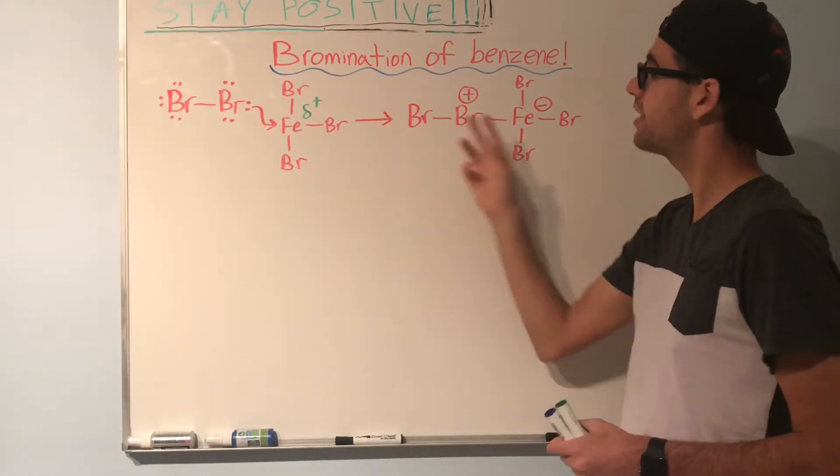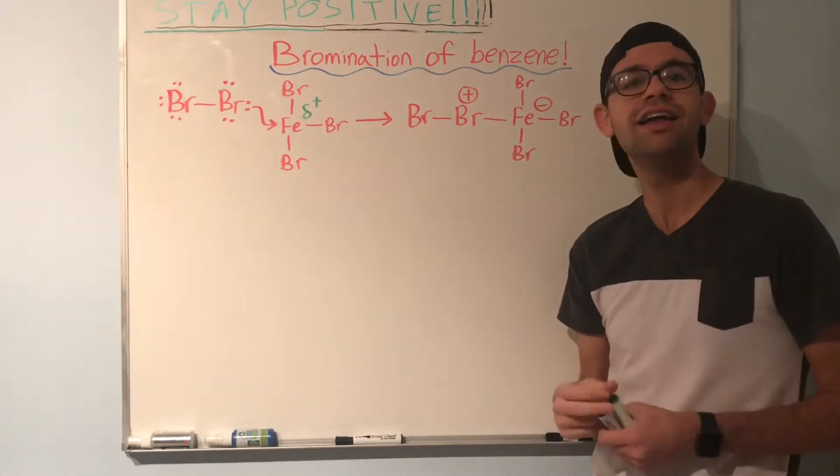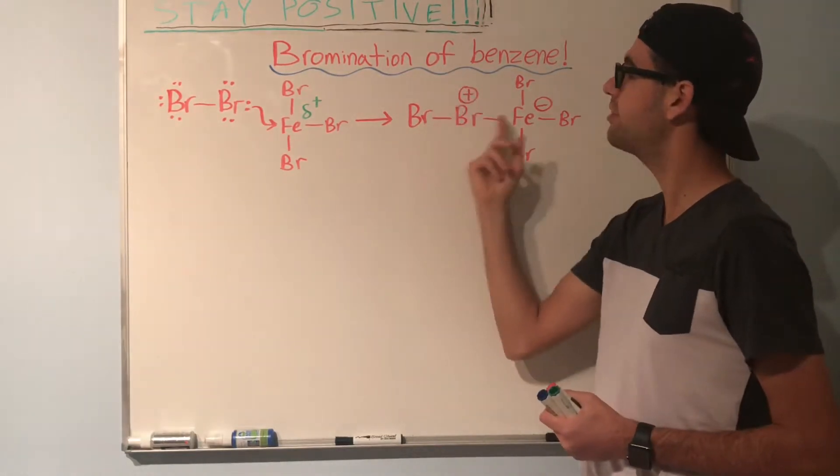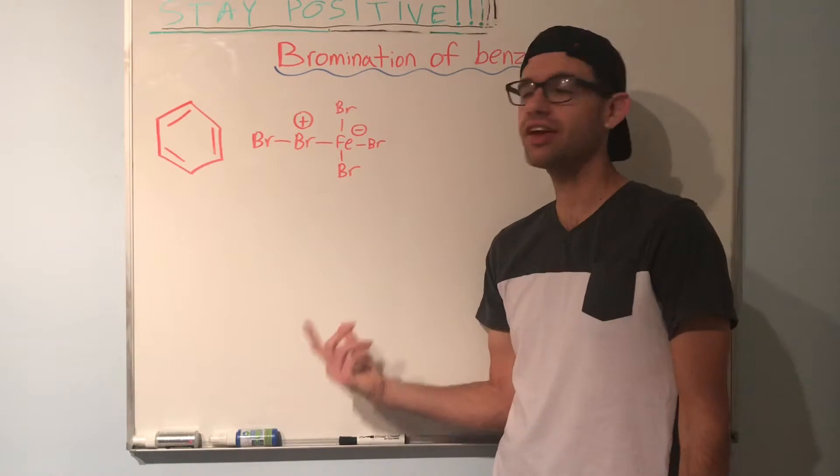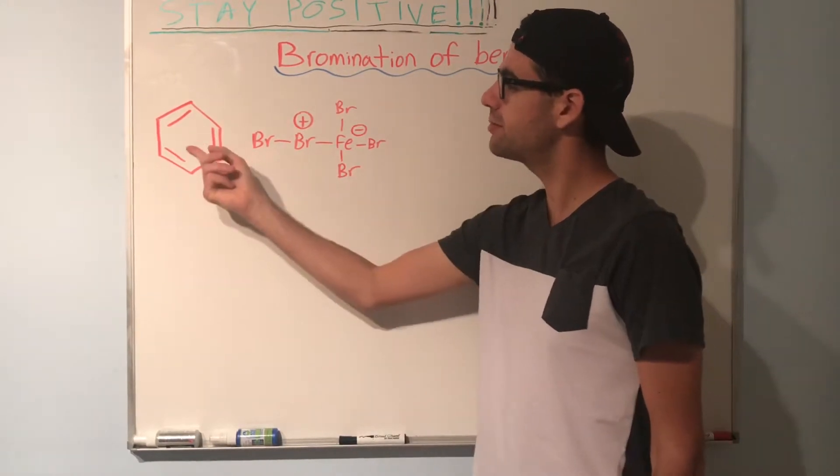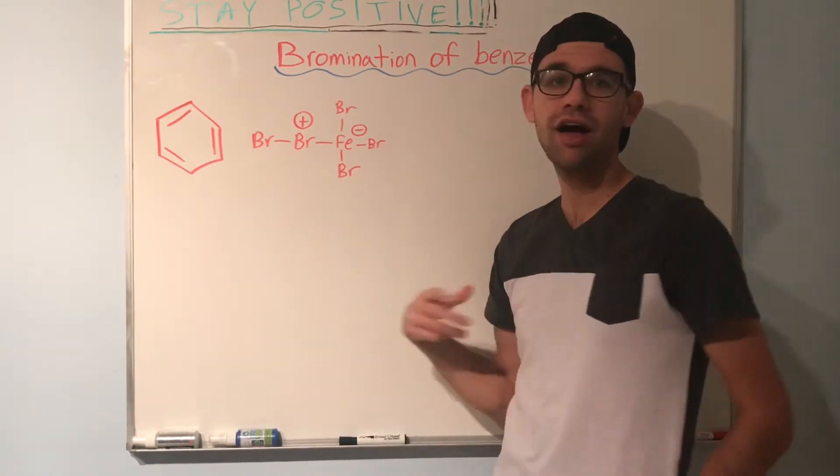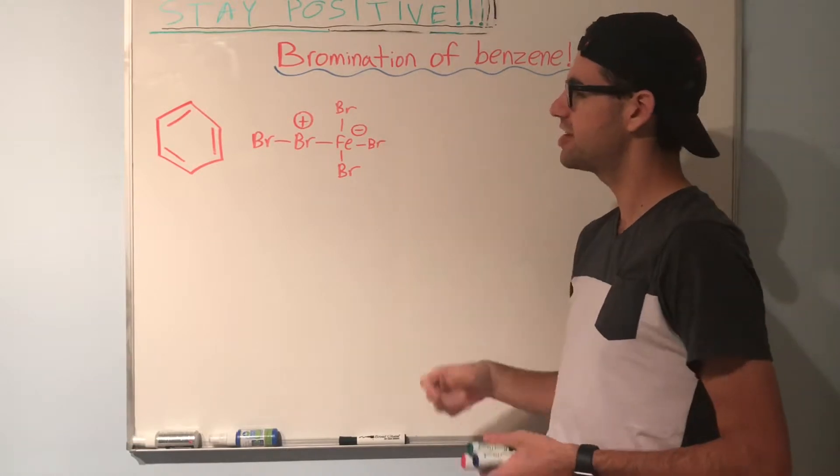Now that we've seen how to prepare the strong electrophile, let's go into the mechanism of how to add a bromine specifically onto a benzene ring. Here I've drawn our two reactants: a benzene molecule and the strong electrophile that we created in the previous step.